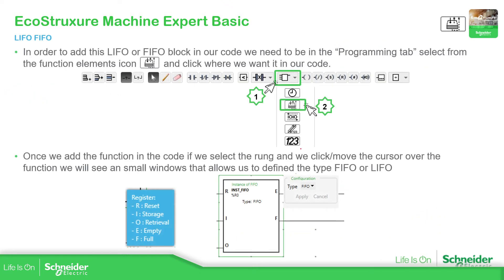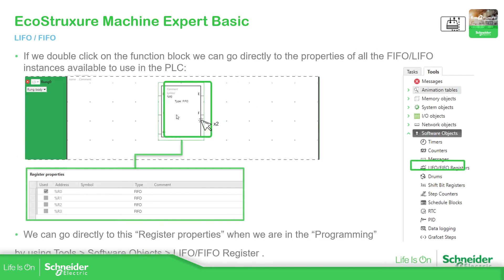In order to use the function block in code, it's very simple. We need to go to the function block icon and select it. Once we place it in our code, we have the possibility to configure FIFO or LIFO, and if we double click we can go to the FIFO LIFO properties. Moving around the function block we can see descriptions of inputs and outputs — you have the reset, storage, retrieve, and status outputs for empty or full. In the register properties you can configure whether you want LIFO or FIFO.